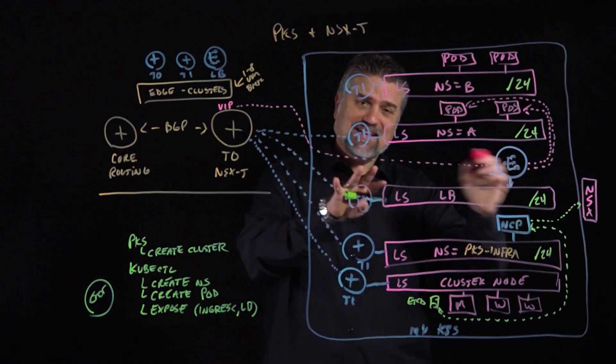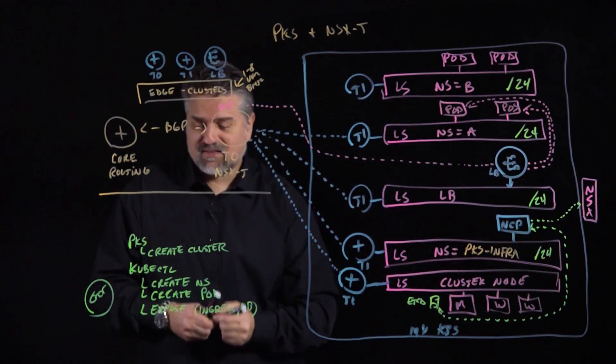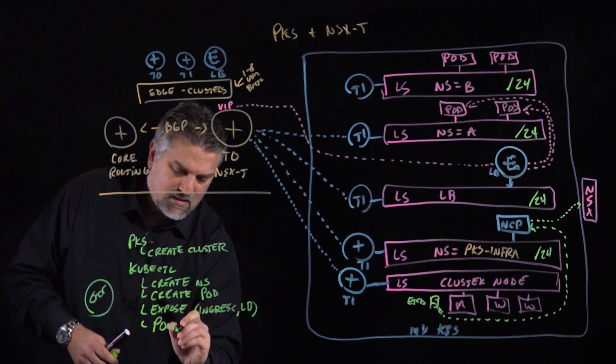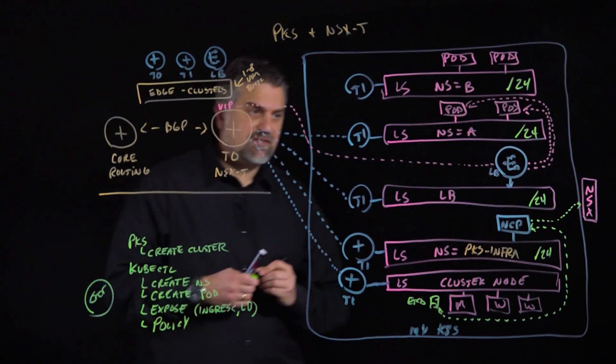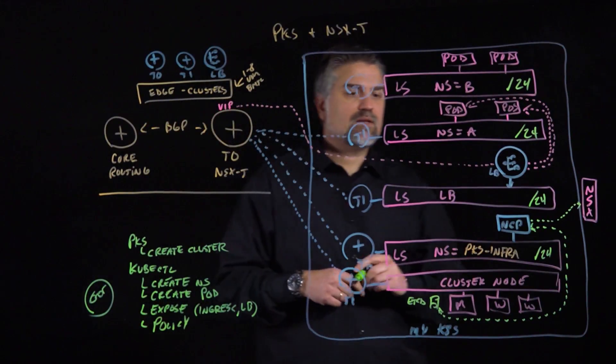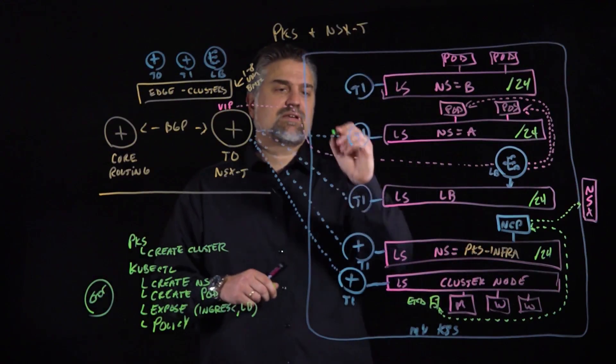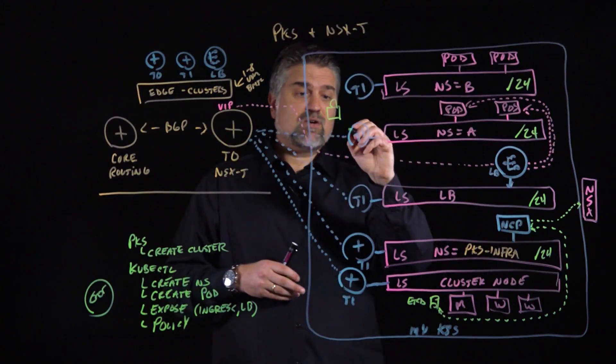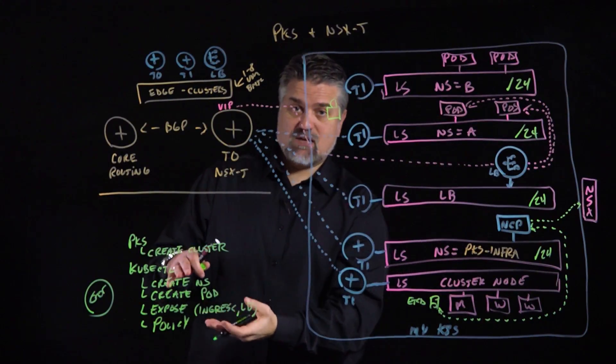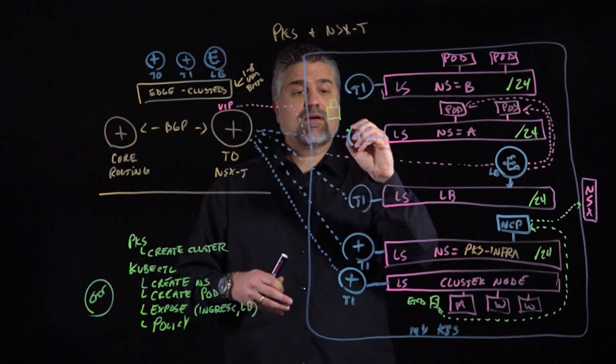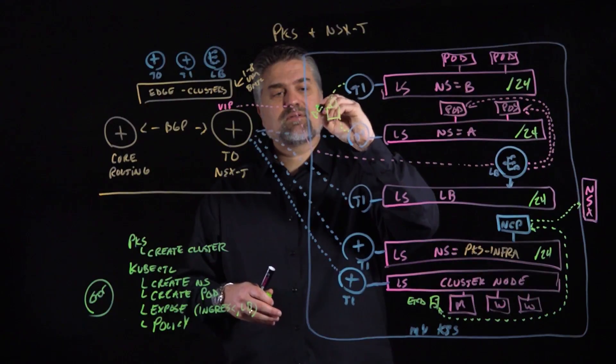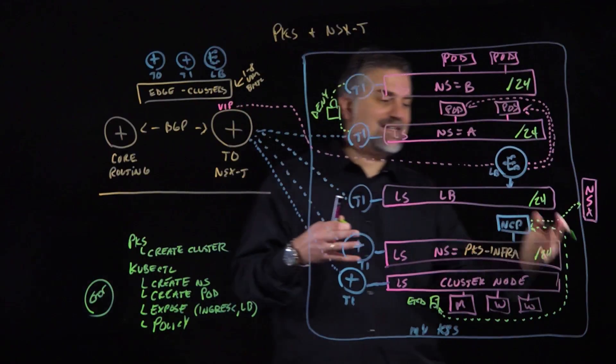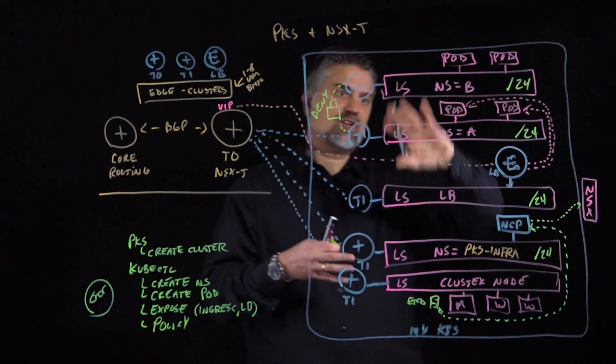Now, in addition to wanting to expose the service, the other key thing that our developer might do through our kubectl and Kubernetes APIs is define policy, a security policy on this application. What we could do with that is, let's say we wanted to implement a policy that denied access between these two logical switches. We could actually write a bit of YAML that we feed into our Kubernetes API that says, hey, I want to deny based on pod membership from this namespace to this namespace and implement a distributed firewall dynamically in our NSX-T infrastructure that prevents that.